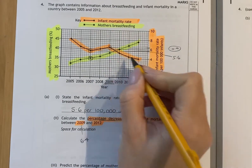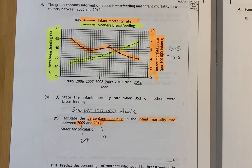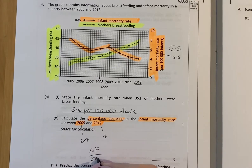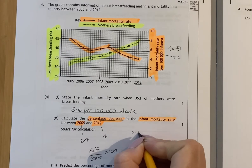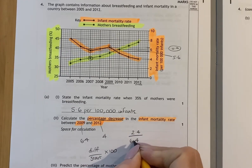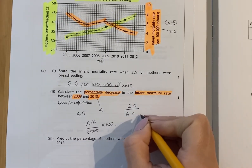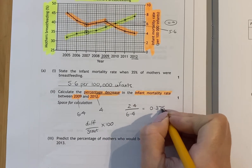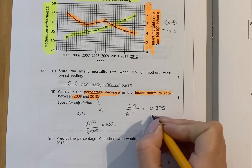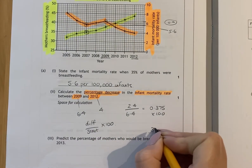The next value for 2012 is 4. For this calculation, we do difference over starting value, times 100. The difference between those two numbers is 2.4, and we started at 6.4. Dividing 2.4 by 6.4 gives us 0.375, and then we multiply by 100 to get our percentage — so the percentage decrease is 37.5.